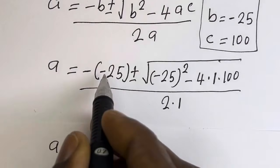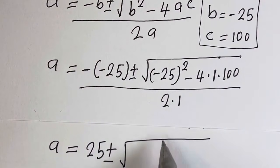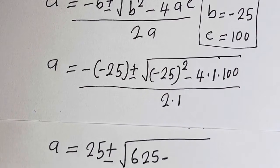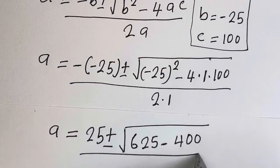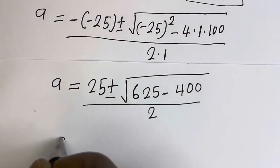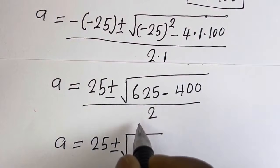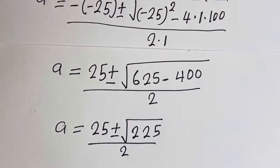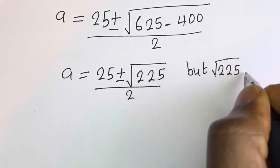Therefore, A is equal to minus times minus 25, which is 25, plus or minus square root of minus 25 squared — that is 625 — minus 4 multiplied by 1 multiplied by 100, that is 400, everything divided by 2 multiplied by 1, that is 2. So A equals 25 plus or minus square root of 625 minus 400, that is 225, divided by 2. The square root of 225 is equal to 15.